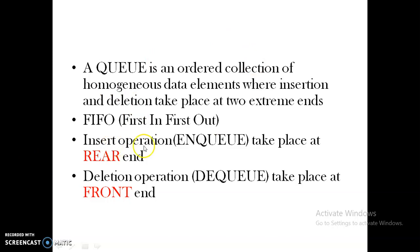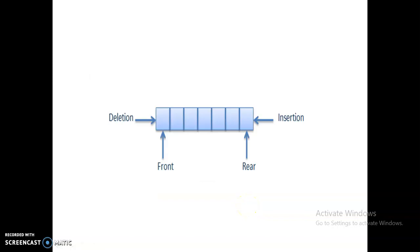There are two operations: insert and delete. A queue has two ends — the rear end and the front end. The insertion operation is renamed as 'enqueue' and the deletion operation is renamed as 'dequeue'. Just like push and pop in stack, here we have enqueue and dequeue. Enqueue takes place through the rear end and dequeue through the front end.